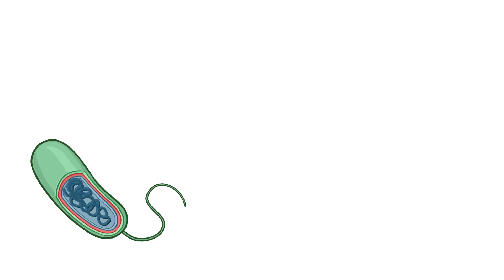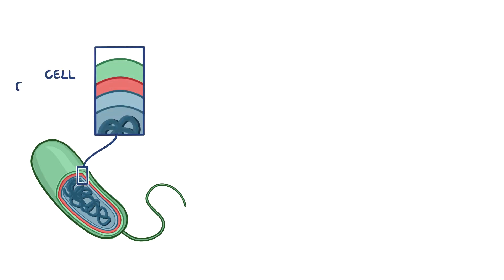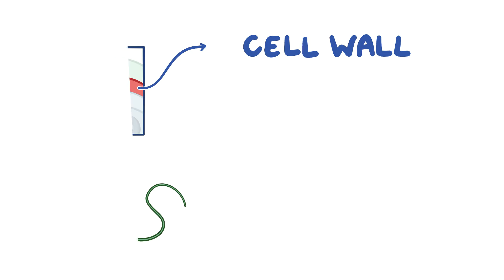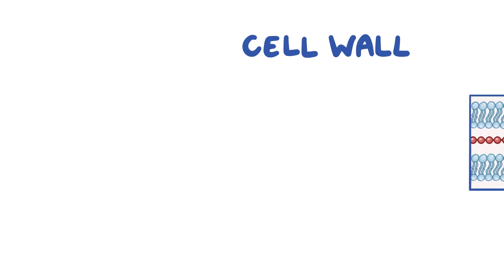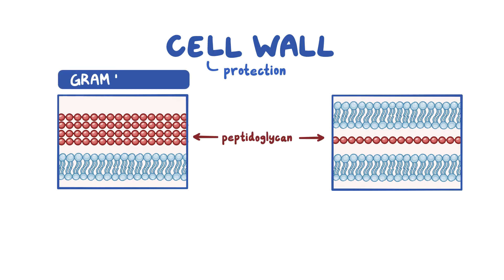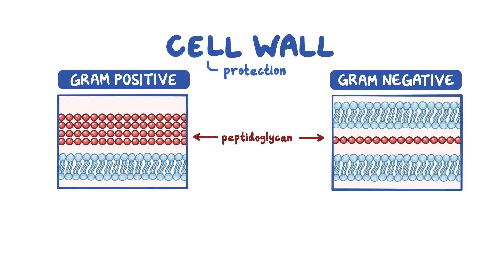Bacterial cells are often surrounded by several layers, which are collectively called the cell envelope. Starting with the cell wall, which is found on the outer surface of the cell membrane — its most important role is to protect the bacteria. It consists of peptidoglycan, which usually helps differentiate whether bacteria are gram-positive or gram-negative.